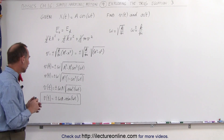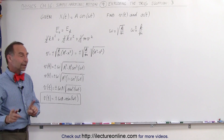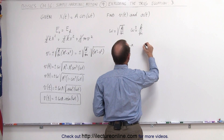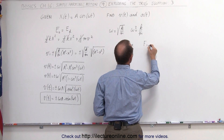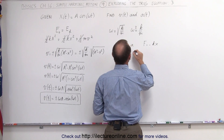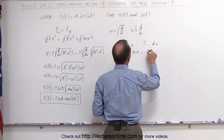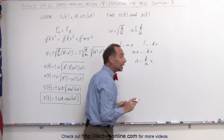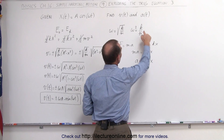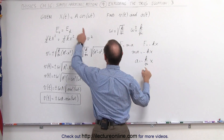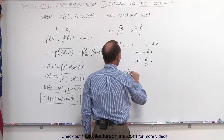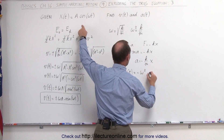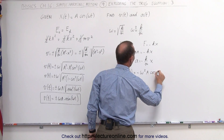The next thing we'll want to do is find the acceleration as a function of time. For that, we need to go back to Newton's second law. We know that F equals ma, and we know that Hooke's law says that F, the force of the spring on the object, is equal to minus kx. Since we can set these two equations equal to each other, we can write m times a equals minus k times x, or a equals minus k over m times x. If we now make the substitution, k divided by m can be written as omega squared and x can be written as A times the cosine of omega t, which means that a as a function of time equals minus omega squared times A times the cosine of omega t.